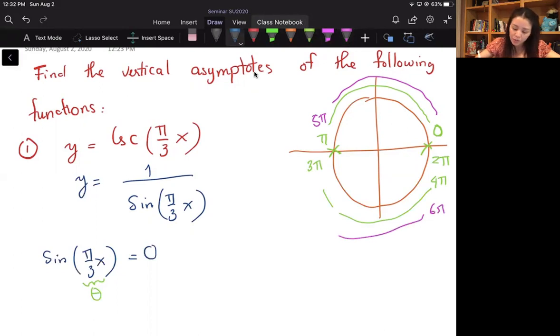So I know that sine of theta equals zero when theta equals zero, π, 2π, 3π, 4π, 5π, 6π, etc., right?